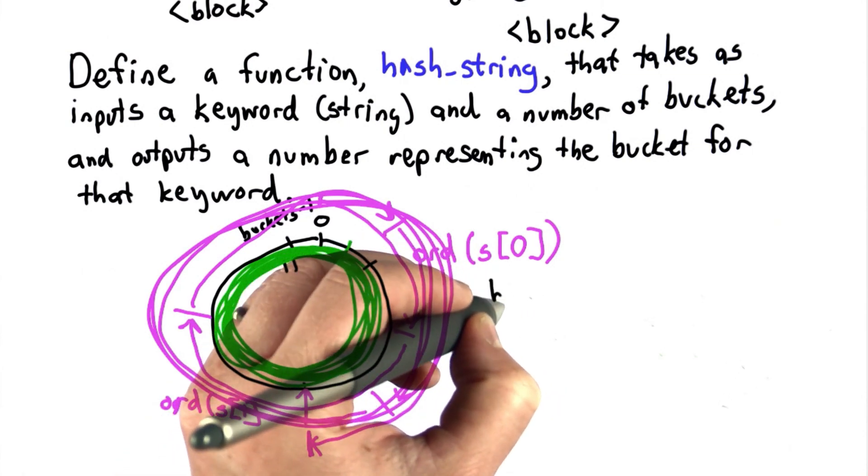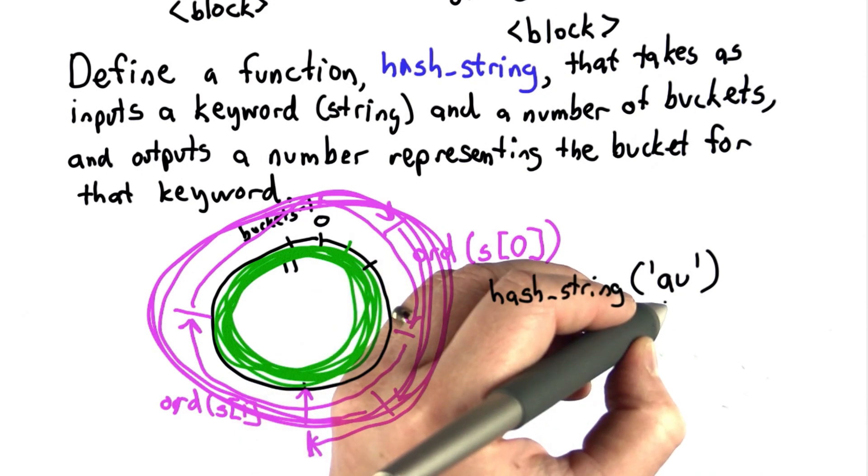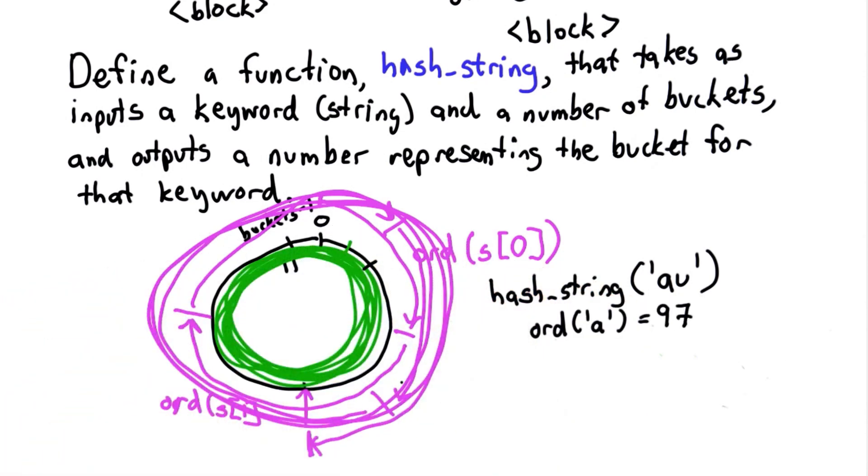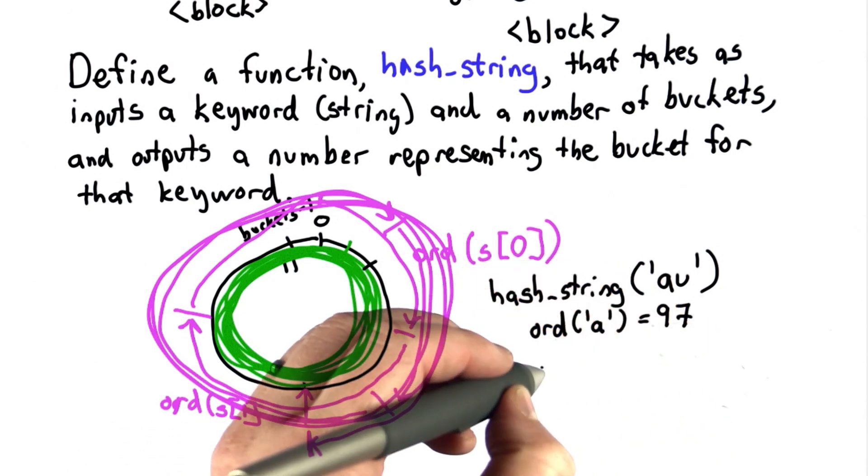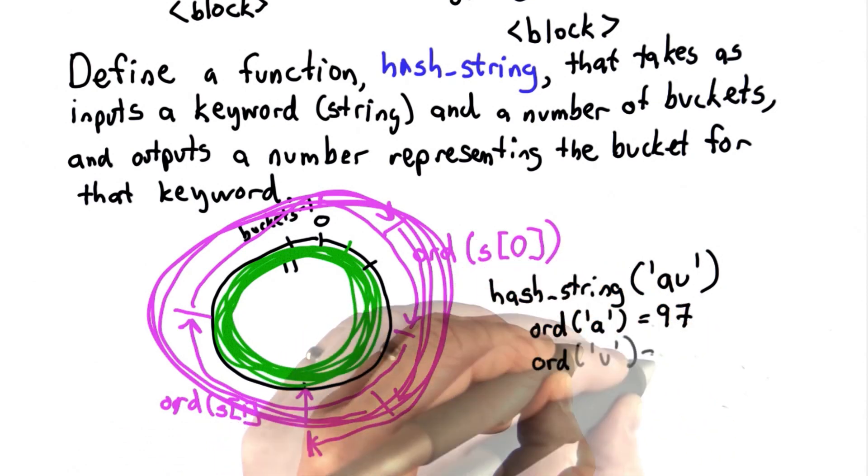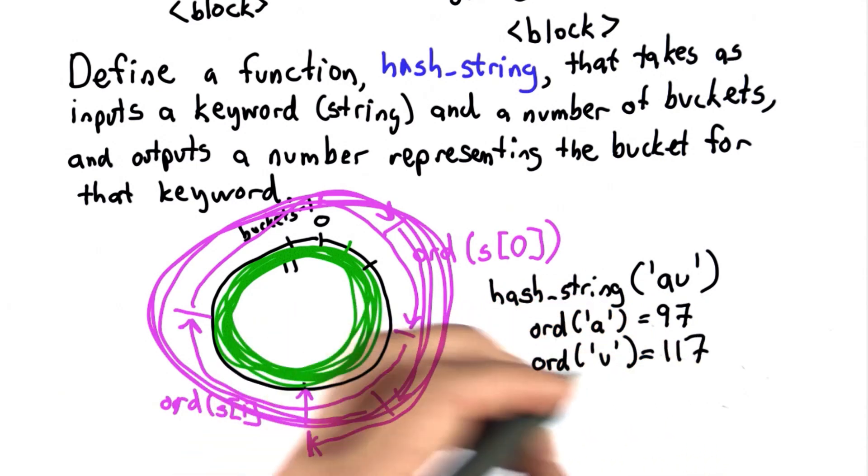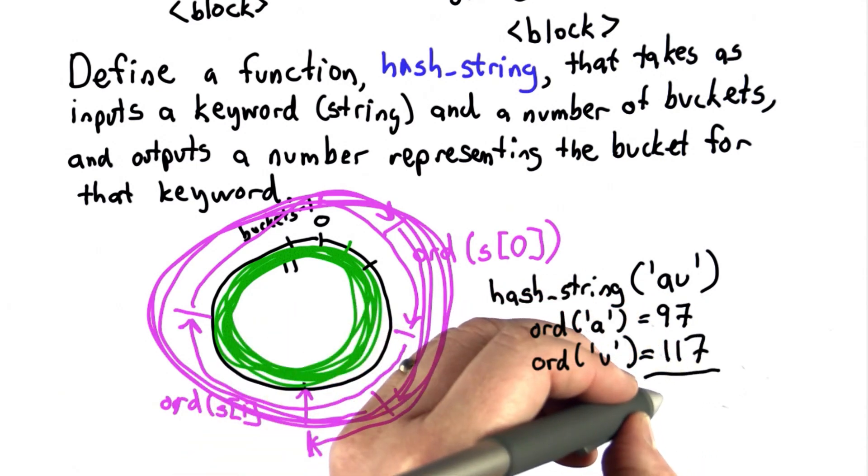Suppose we tried the string AU. The ord of A was 97, and that, when we went out in the circle, ended up at location 1. The ord of U, I can tell you, is 117. When we add those two, we get 214.